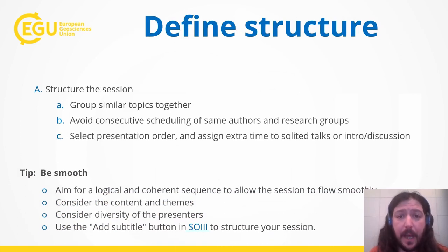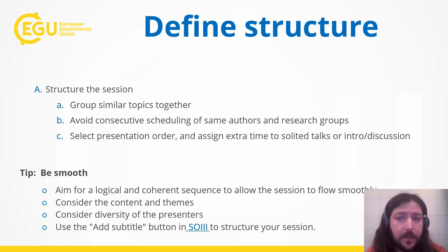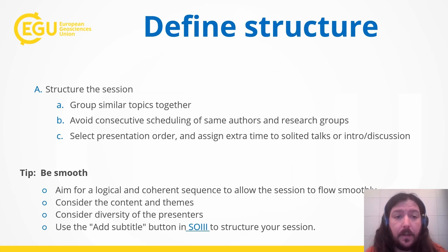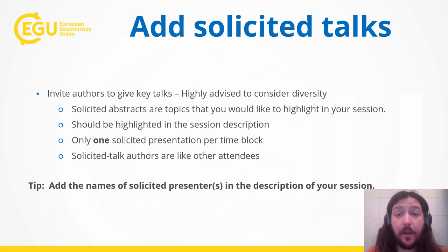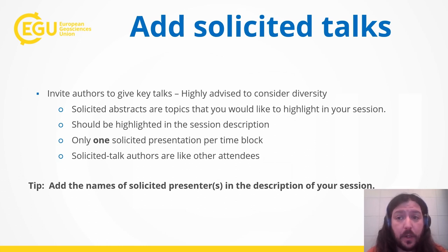After you have selected the abstracts for your session, it is now time to define the structure in which they will be presented. You should consider grouping similar topics together, aiming for a logical and coherent sequence that allows the session to flow smoothly. Also consider the content and themes of each presentation, as well as the diversity of the presenters, and avoid scheduling talks by the same author or research group consecutively. Once a logical order is defined, you can use the Add Subtitle button in the online tool to structure your session. With that, you can define the length of solicited presentations, if you have any. As a convener, you can highlight up to one solicited presentation per time block, and we recommend indicating the names of solicited presenters in the description of your session in the online tool.